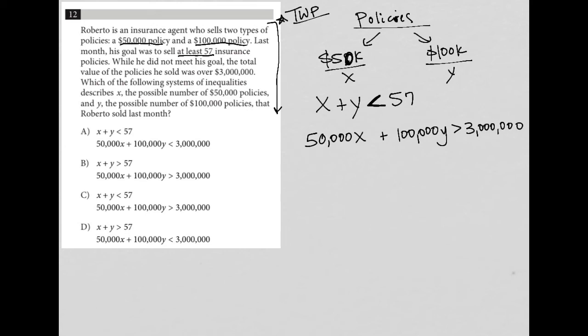The next sentence asks which of the following systems of inequalities describes X, the possible number of $50,000 policies, and Y, the possible number of $100,000 policies that Roberto sold last month. The beauty of using this translate word problem strategy is that at this point, we already have our answer because we wrote these inequalities based upon what we read. Now we're just looking to the answer choices to see where we find exactly what we translated.